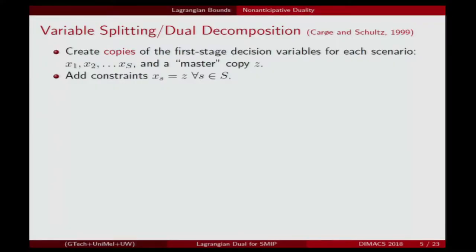We're going to use dual decomposition as the base underlying approach to get a strong bound for this problem. This is basically just a variable-splitting technique. Those first-stage variables, which are supposed to be made here-and-now, can't depend on the scenario. So we make a copy for every different scenario anyway, and a master copy z, and add constraints saying all copies of the variables are equal to the master copy — and hence all equal to each other.